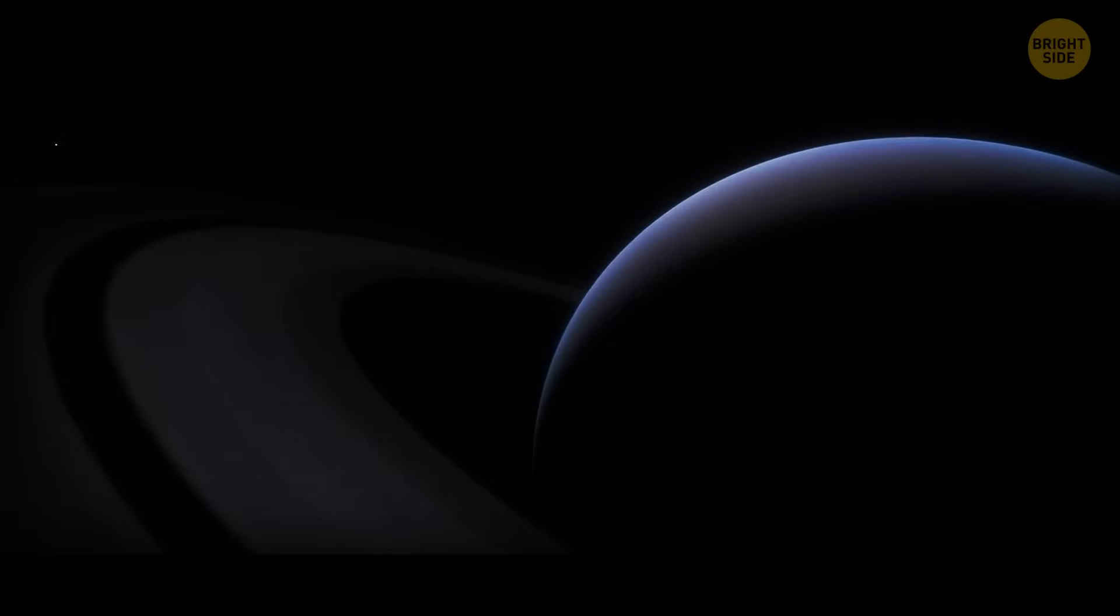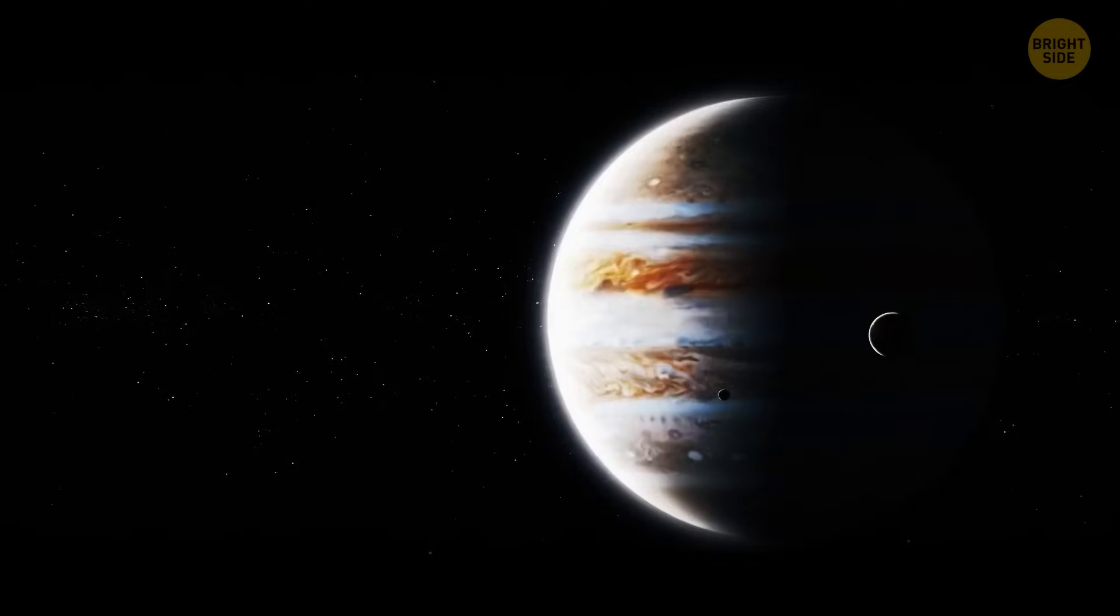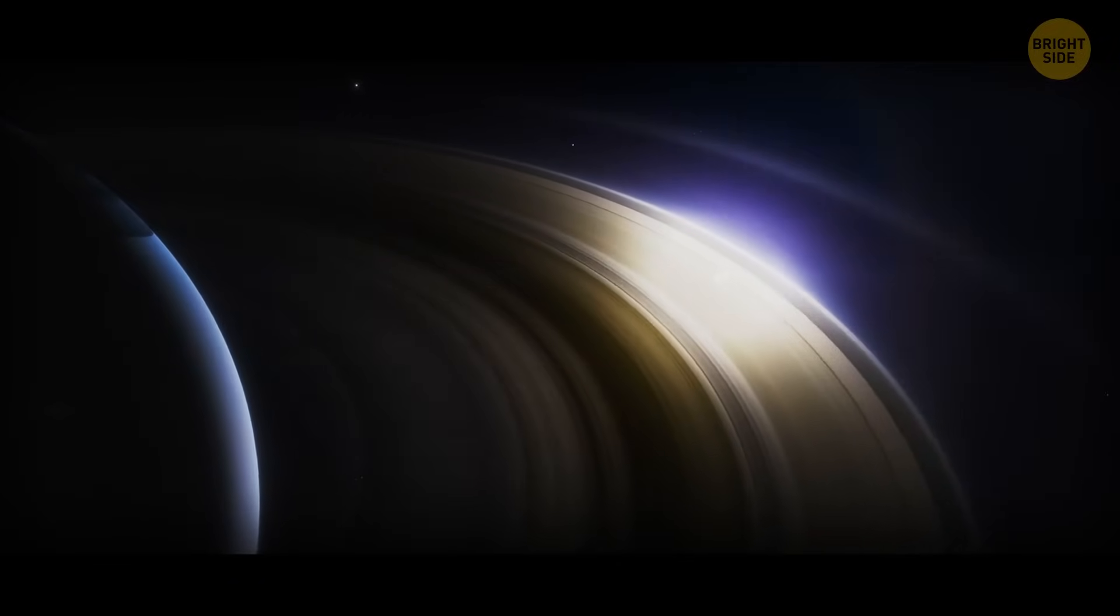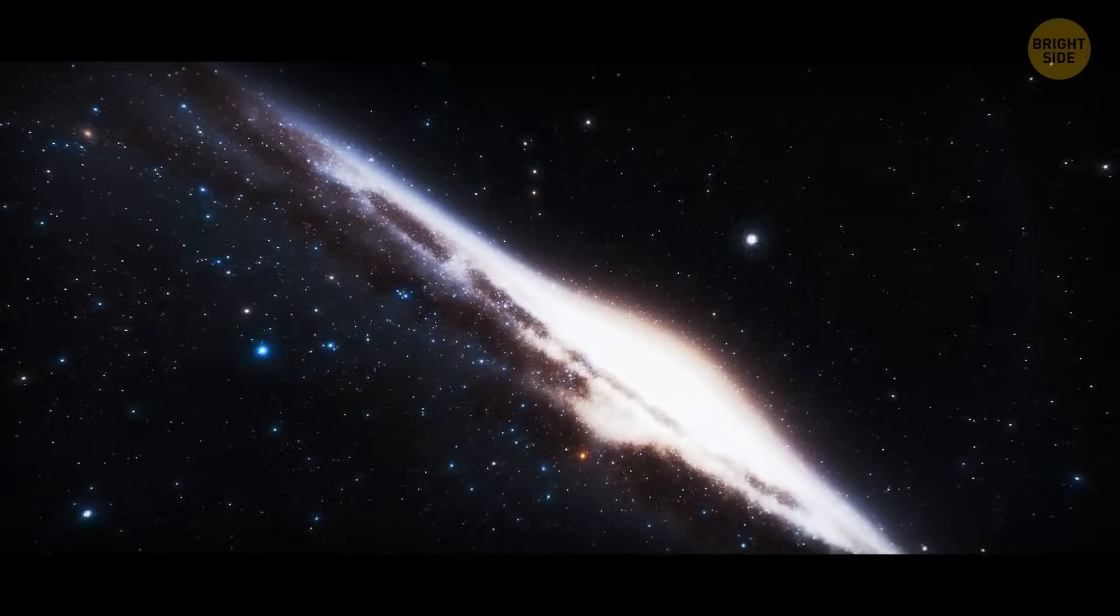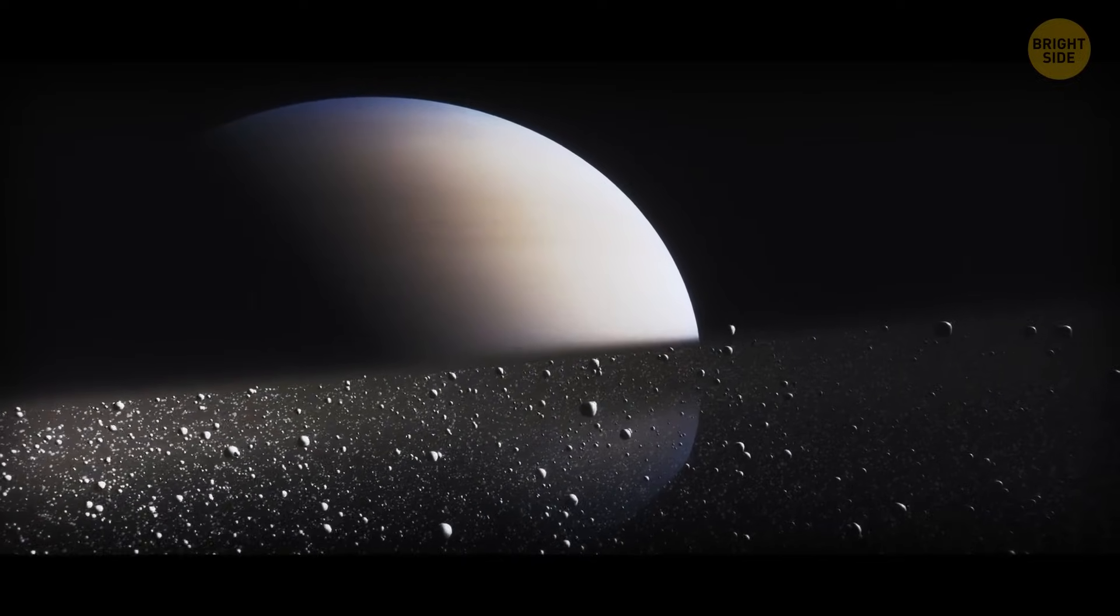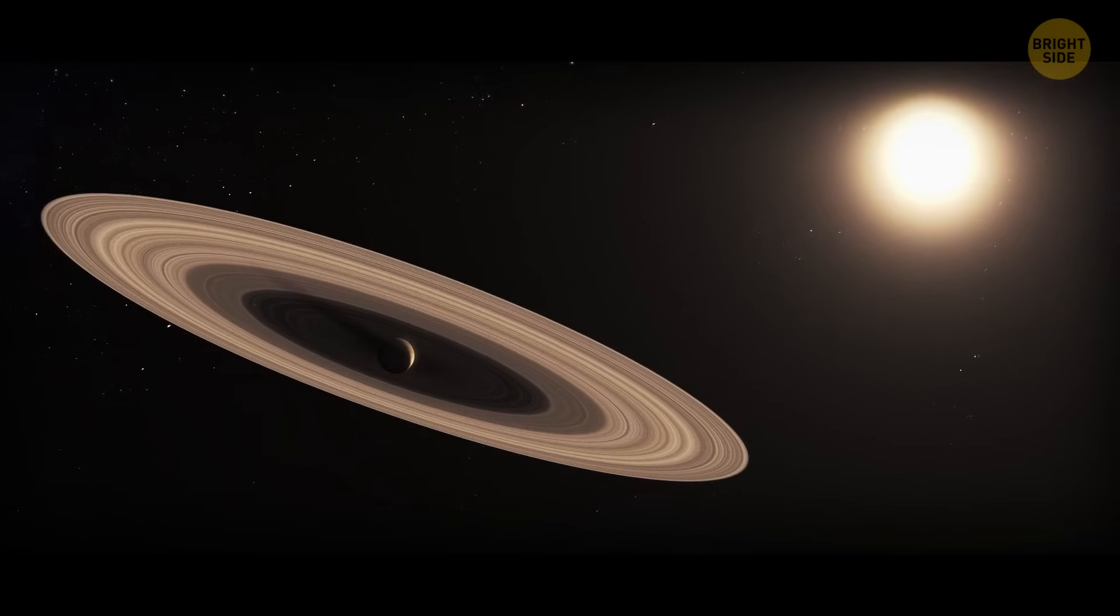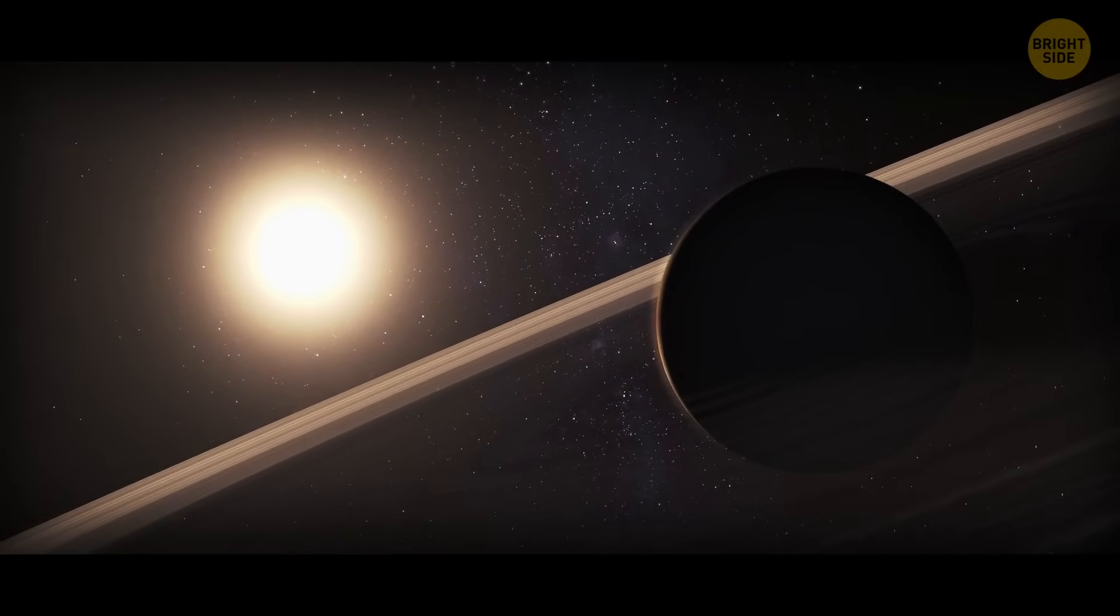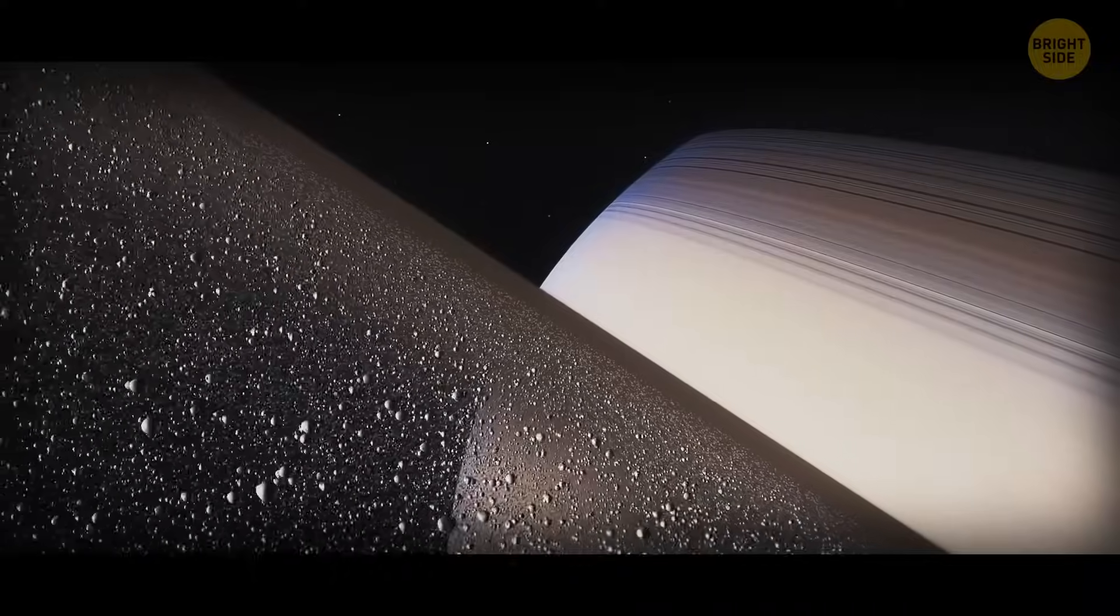Somewhere out there, even farther, there's a Super Saturn, J1407b, much larger than Jupiter or Saturn. It's an exoplanet, which means a planet that orbits a star other than our sun. Super Saturn is 434 light-years away from Earth, in the constellation of Centaurus. It's the only exoplanet we know about with rings similar to Saturn. It actually has a huge ring system, 200 times bigger than Saturn's rings. There are more than 30 rings, each of them tens of millions of miles in diameter. There are gaps in the rings, which means there could be some interesting satellites, exomoons, around.